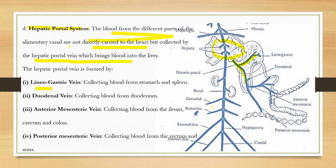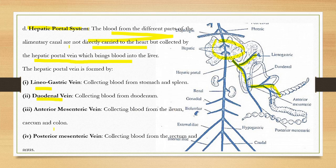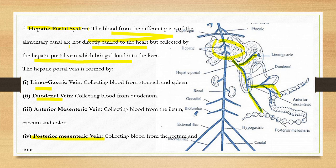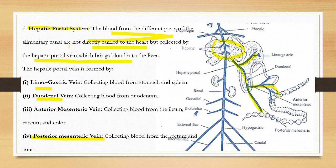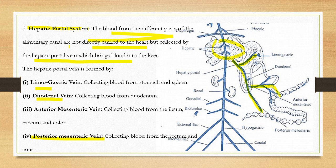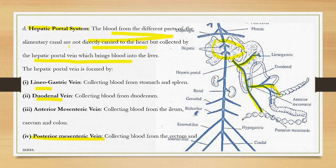The anterior mesenteric vein collects blood from the ileum, cecum, and colon region. The last one is the posterior mesenteric vein with its branches. The main function of the hepatic portal system is to collect nutrients and food water and transport them to the liver. This is all about the venous system.